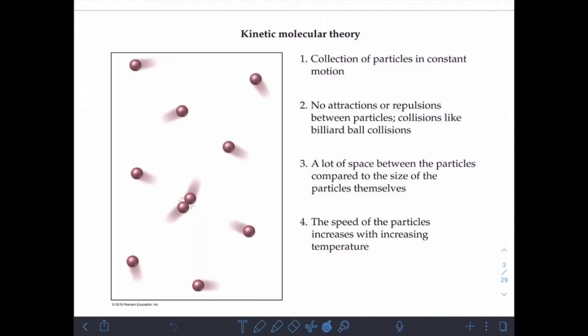Part two is that there are no attractions or repulsions between the particles. Basically, we treat them as if they are billiard balls. They're just going to bounce off of each other like hard marbles. They bounce off the sides of the container and they bounce off of each other with no attraction or repulsion. There's a lot of space between the particles compared to the particles themselves, so lots of room in between those individual molecules. And the last part is that the speed of the particles increases with increasing temperature. So if I take a collection of gas molecules and I raise the temperature, they're going to move faster. And conversely, if I cool them down, they're going to move slower. And I sort of already mentioned this before, if we get down close to absolute zero, almost all molecular motion ceases, including physical travel or kinetic travel.